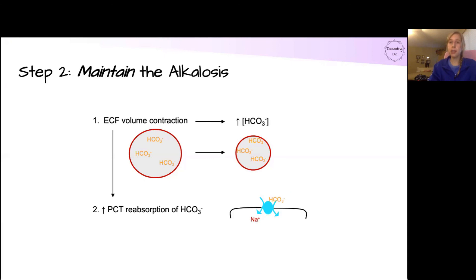We also, because of the low volume state, will have an increased absorption of sodium bicarbonate in the proximal convoluted tubule. This is related to the regulatory mechanisms of the kidney, where if we have a low volume state, it wants to reabsorb extra sodium. And along with a bunch of other ions, sodium is reabsorbed with bicarbonate in the proximal convoluted tubule.